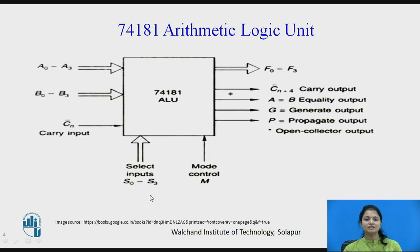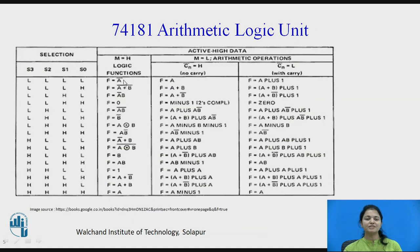For the selection mode, we select it first. With inputs A0 to A3 and B0 to B3, when all S3, S2, S1, S0 are 0, whatever the A input is given is inverted. So this is the logic function for inverting input A. The next selection gives A plus B-bar, which is the NOR function.